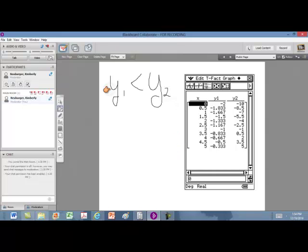All we need to do is take a look at the values in this table. In order to find out when y1 is less than y2, you want to glance through this table and first find out where they're the same. Notice right here, when x is 3, y1 and y2 are both negative 1.